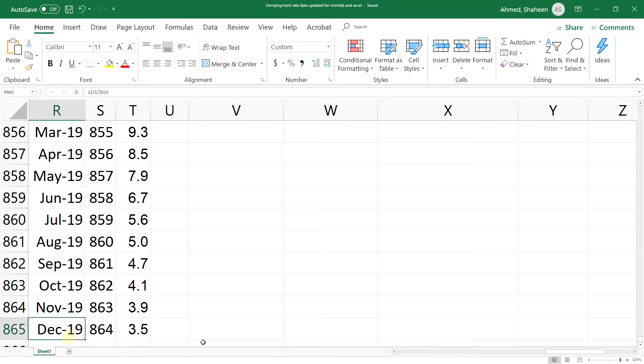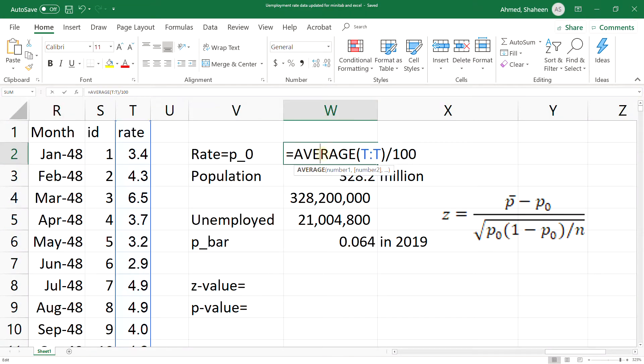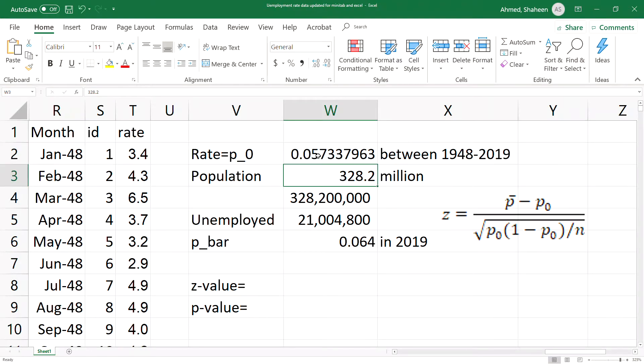864 months of unemployment rate data. The average is about 5.7 percent. The current population in 2019 was about 328 million. One of the questions would be: was the unemployment rate in 2019 higher? This is before COVID-19, just a normal situation.